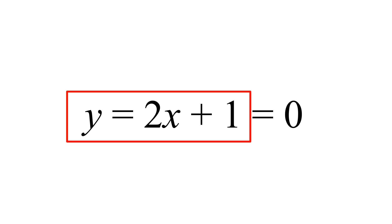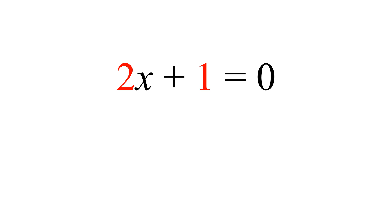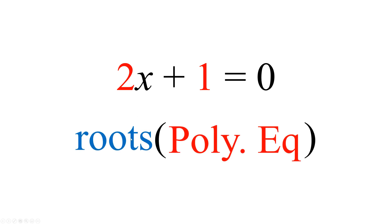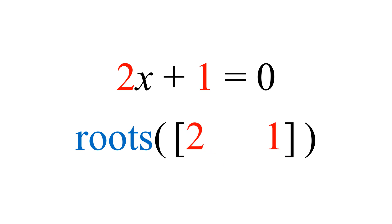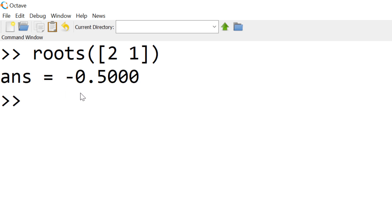The question is how to utilize Octave and MATLAB to solve this equation. In Octave and MATLAB, there is a built-in function called ROOTS. The ROOTS function requires a polynomial equation's coefficients within a row vector in parentheses. In this linear equation, we have 2 for x and 1 for the constant. In the command window, type roots([2 1]), and you can see the solution equals minus 0.5.